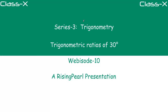Hello friends, welcome to risingpearl.com. Today we are looking at series 3 and talking about trigonometry. This is webisode number 10 and today's topic is trigonometric ratios of the 30 degree angle. In webisode 8 and webisode 9, we looked at trigonometric ratios of 45 degrees and 60 degree angles respectively. So friends, let's dive in.